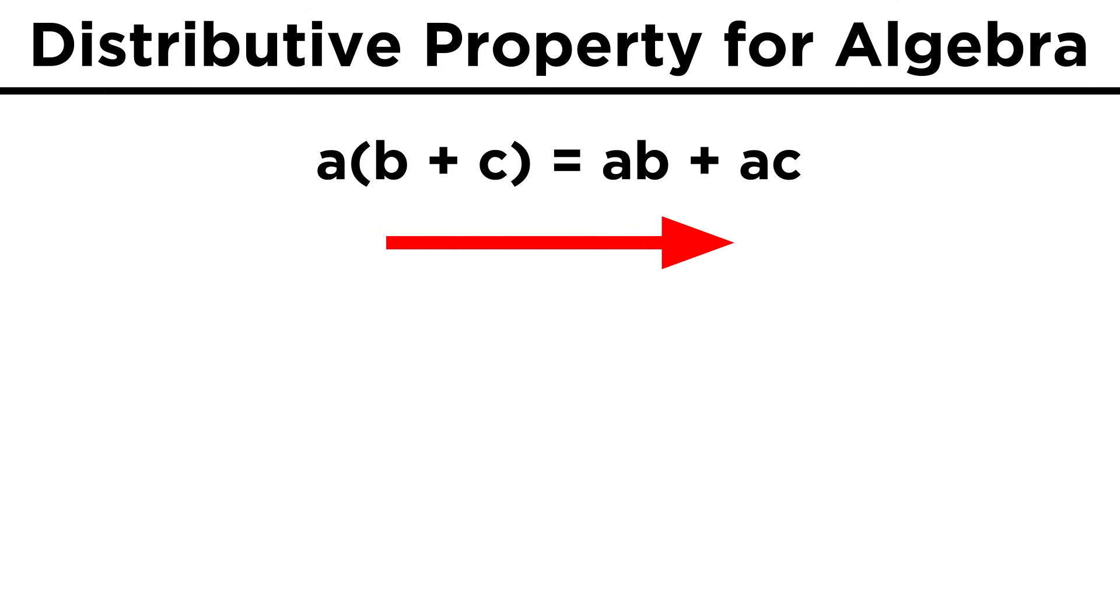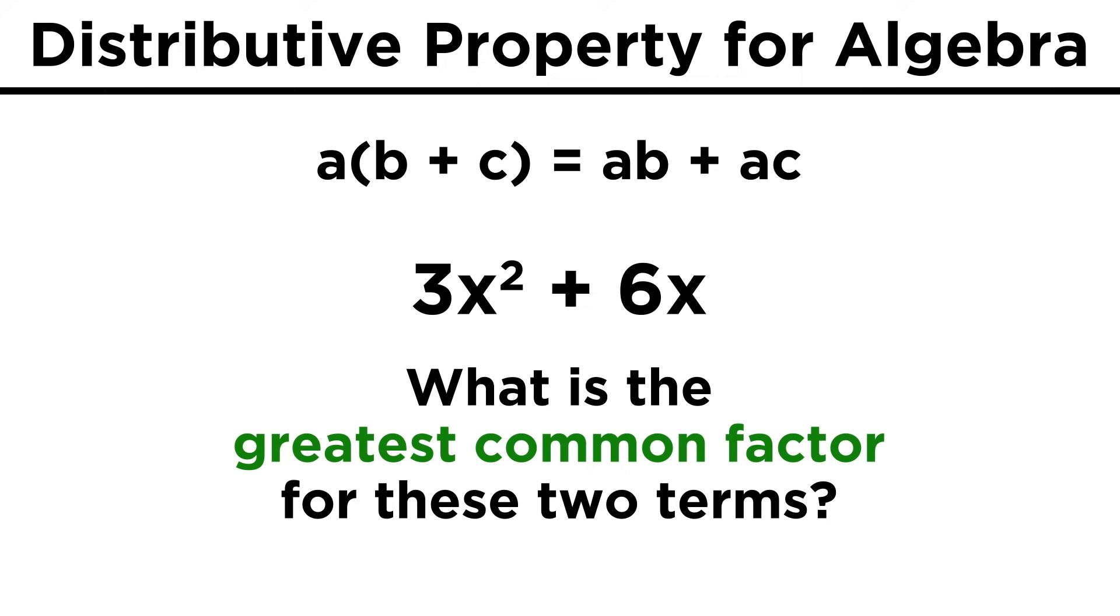In algebra, we will want to be able to use the distributive property this way, and we will even want to be able to do it in reverse, by removing some common factor from a sum or difference. For example, if we have three x squared plus six x, another way to express this would involve identifying the greatest common factor of these terms, and factoring it out of the expression.